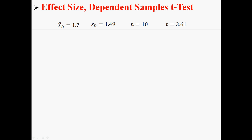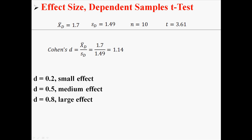So using this information that you would have after doing any Dependent Samples t-test, I'm going to calculate effect size. First, I'm going to calculate it using Cohen's D. Cohen's D is just the mean difference over the standard deviation of the difference. So in this case, we can find a Cohen's D of 1.14.